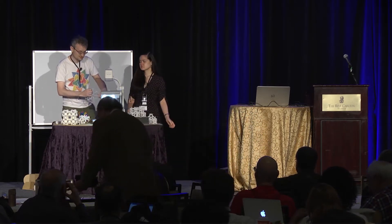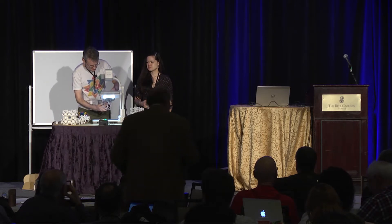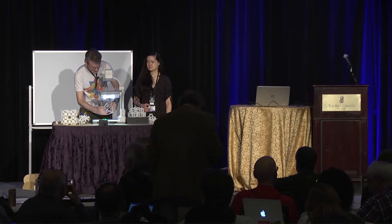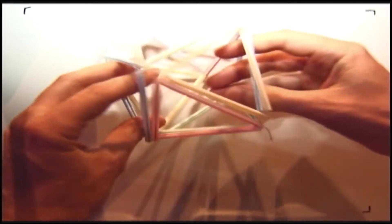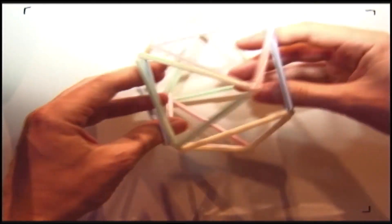Hoberman was not the first to come up with these kinds of things. They go back at least to Buckminster Fuller. This is his jitterbug, and you can see the same sort of thing — it expands in all directions when you pull it. This has more degrees of freedom than the Hoberman sphere. All of the other things we're going to talk about have one degree of freedom.